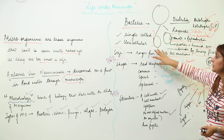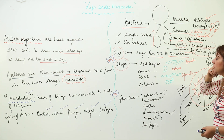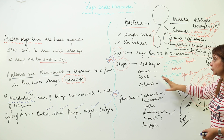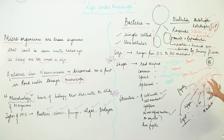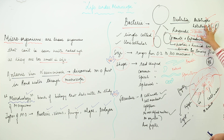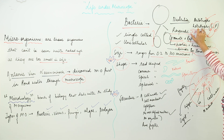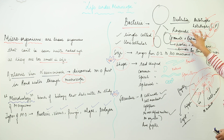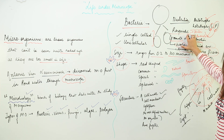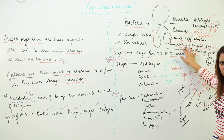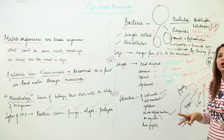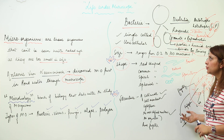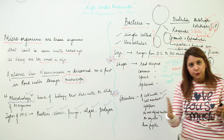To summarize bacteria: they are unicellular, size ranges from 0.2 to 100 microns, shapes can be rod, comma, spherical, or spiral, structure includes cell wall, cell membrane, cytoplasm, no well-defined nucleus, and flagella. They form a hard outer covering called a cyst in unfavorable conditions. Nutrition can be autotrophic or heterotrophic (saprophytic or parasitic). Respiration is both aerobic and anaerobic. Growth requires warm and humid conditions. Reproduction is by binary fission.